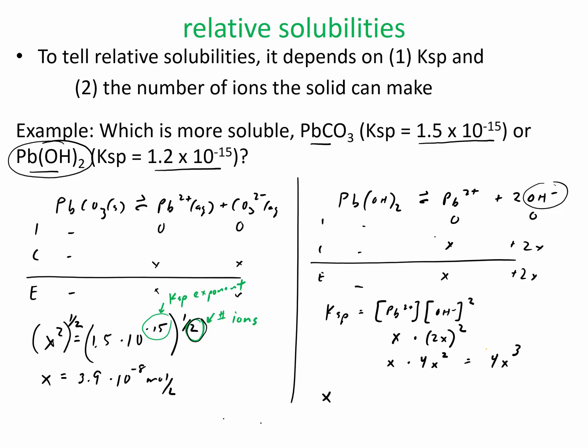So to get the right number for this, then I'm going to end up with x cubed equals the Ksp, 1.2 times 10 to the negative 15th over 4. And then I'm going to take both sides to the 1 third power. And I'll take this side to the 1 third power. And again, we see that this number right here is the total number of ions.